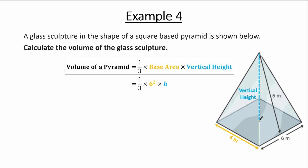The slanted height meets the side of the square halfway through. Joining these two points gives us a line segment which is parallel to the side of the square and has length equal to half the side length — so 3 m. The vertical height and this segment meet at 90 degrees, so there is a right angle.